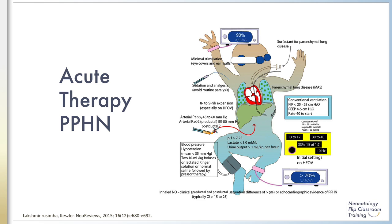This figure, from a 2015 Neo Reviews article, is a great illustration of the goals of clinical care and the variety of therapies employed. There are certainly institutional variations in the approach to acute PPHN management, but this is an excellent broad overview of care principles. Please pause the recording and review the goals, supportive therapies, and possible interventions employed in the management of PPHN.